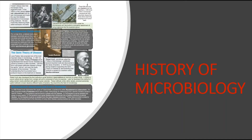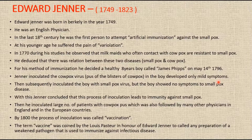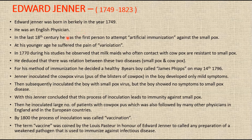Hi everyone. In the previous part of the history of microbiology, we had gone through the contributions of Mr. Anthony van Leeuwenhoek. In this part we are going to discuss about Mr. Edward Jenner, who lived from 1749 to 1823. Edward Jenner was born in Berkeley in the year 1749 and he was an English physician. In the late 18th century he was the first person to attempt artificial immunization against smallpox.